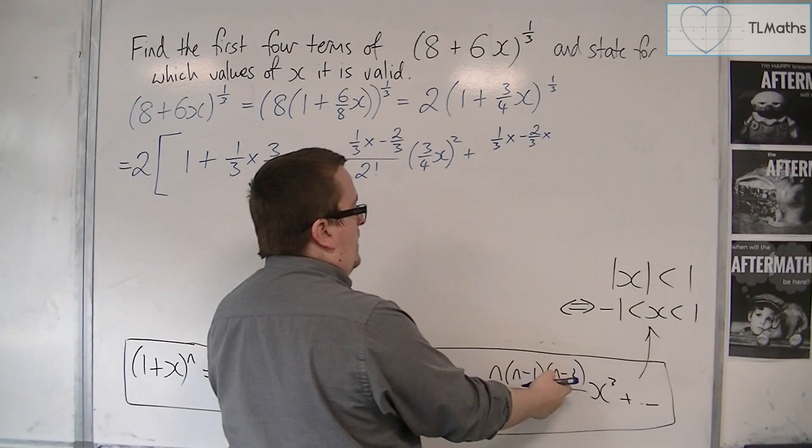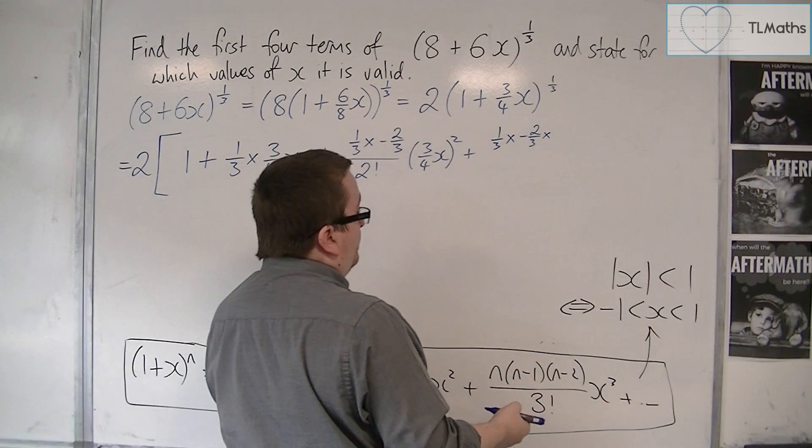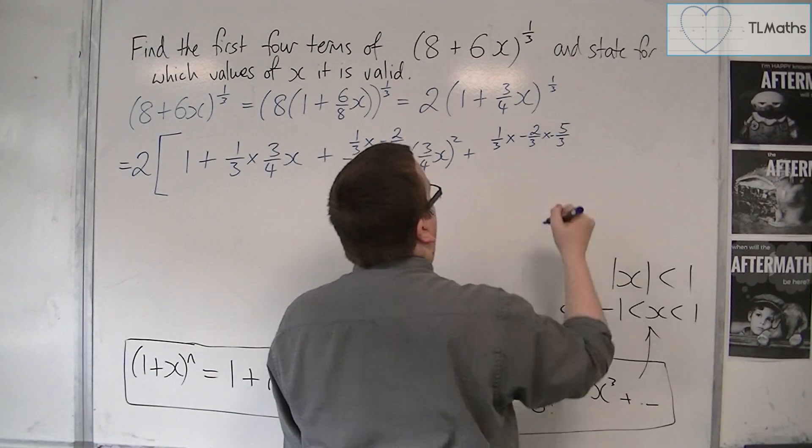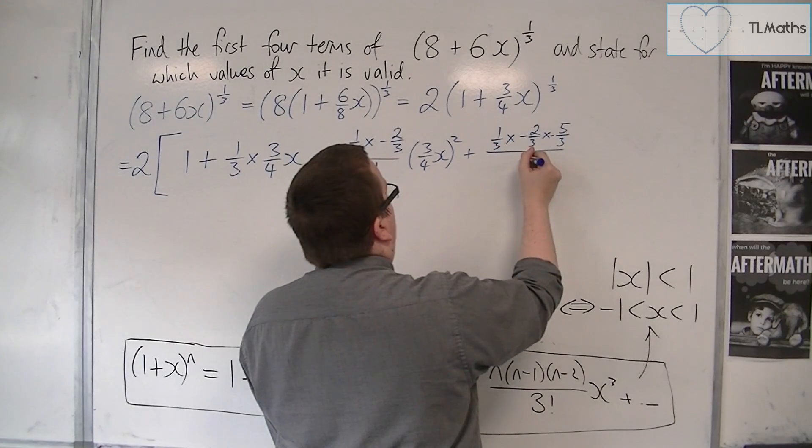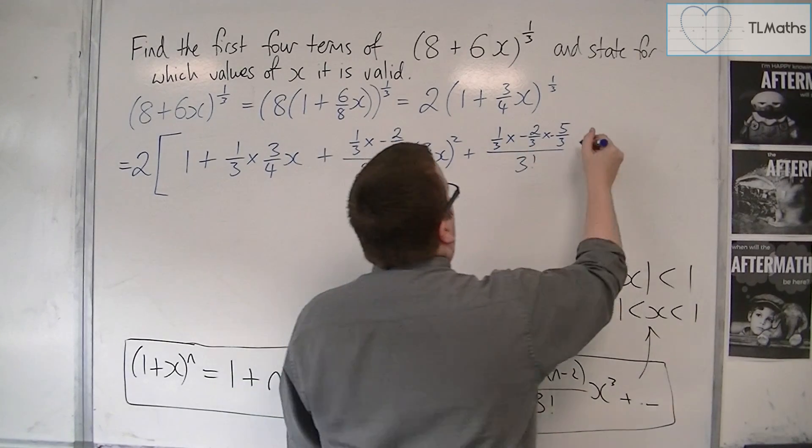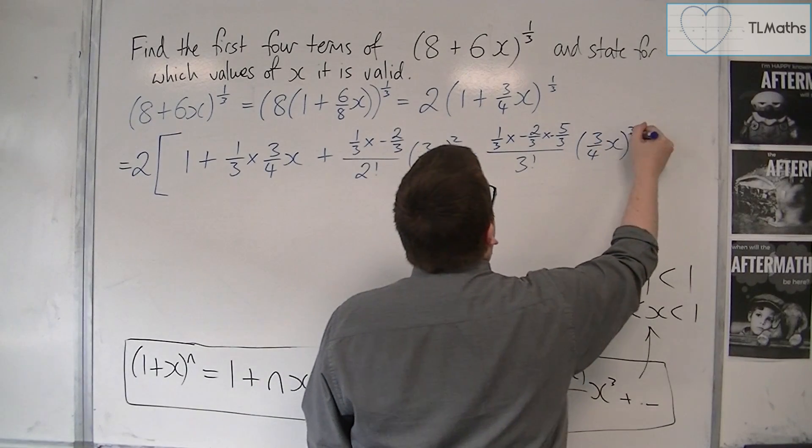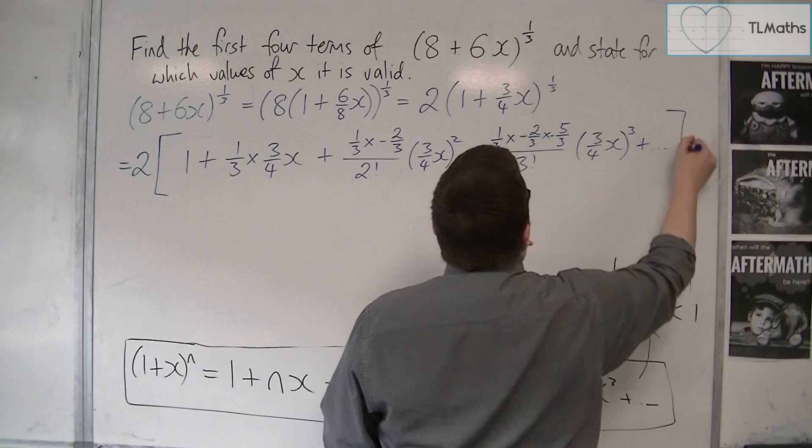So we're going to have -5/3, all over 3 factorial times x cubed, so that's (3/4 x)^3, plus other terms, and then close the bracket. So we've got all of this to simplify.